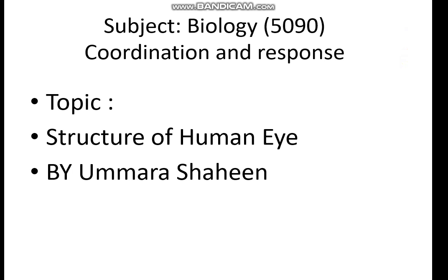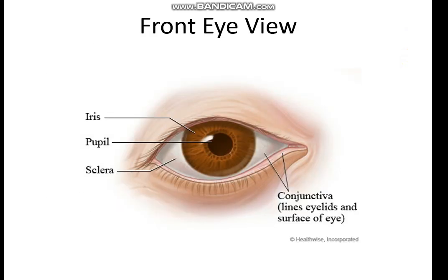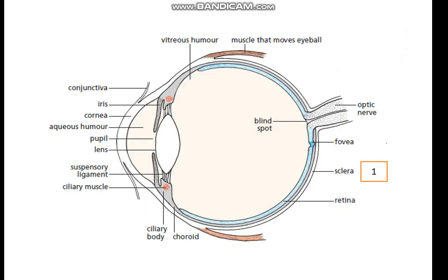Let's have a quick recap. We learned about the front eye view and identified different parts of the horizontal eye view. We learned about the layers of the eye: the outermost is the sclera, a white protective layer; the second one is the choroid, a darkly stained body that provides nourishment with the help of blood vessels; and the retina, on which images form, containing rod and cone cells.